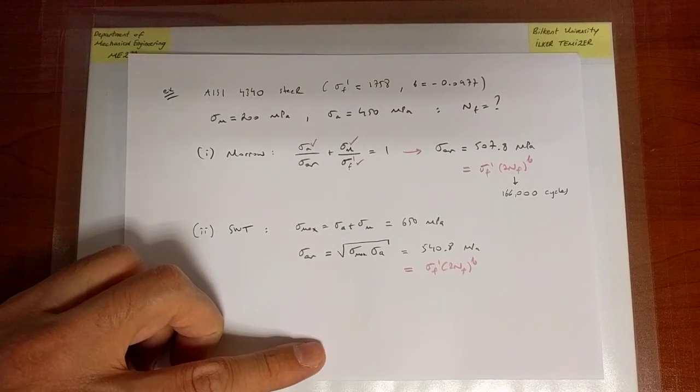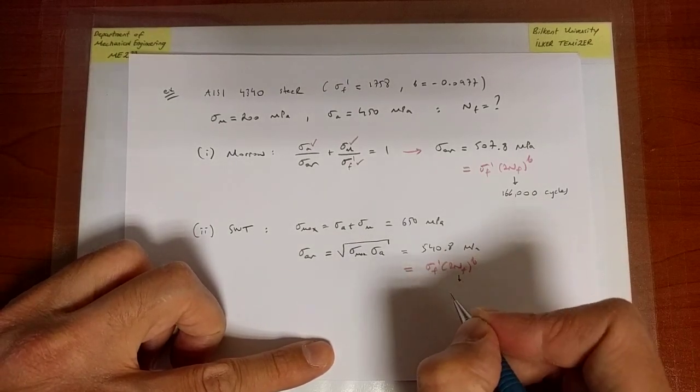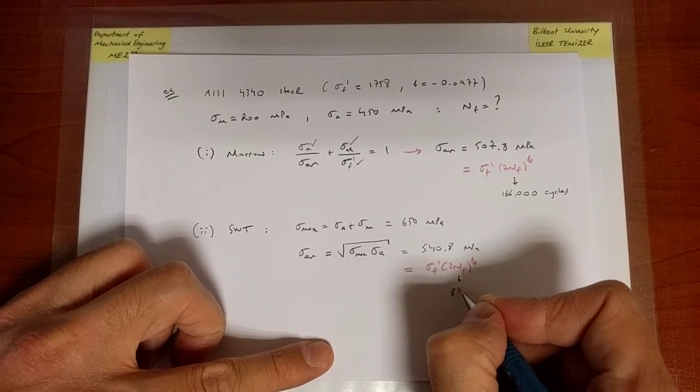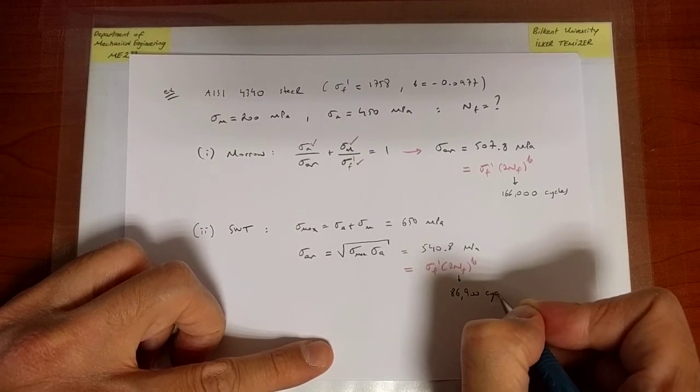And the Basquian equation predicts this relation. And then you can solve for number of cycles to failure, which is going to be 86,900 cycles.